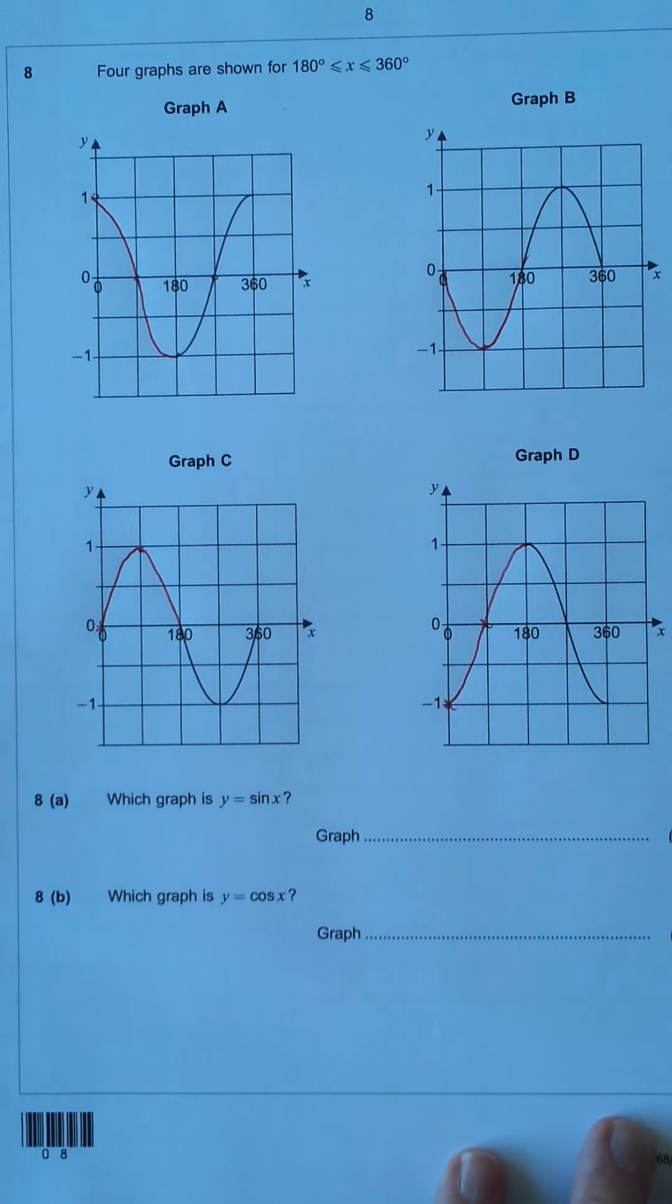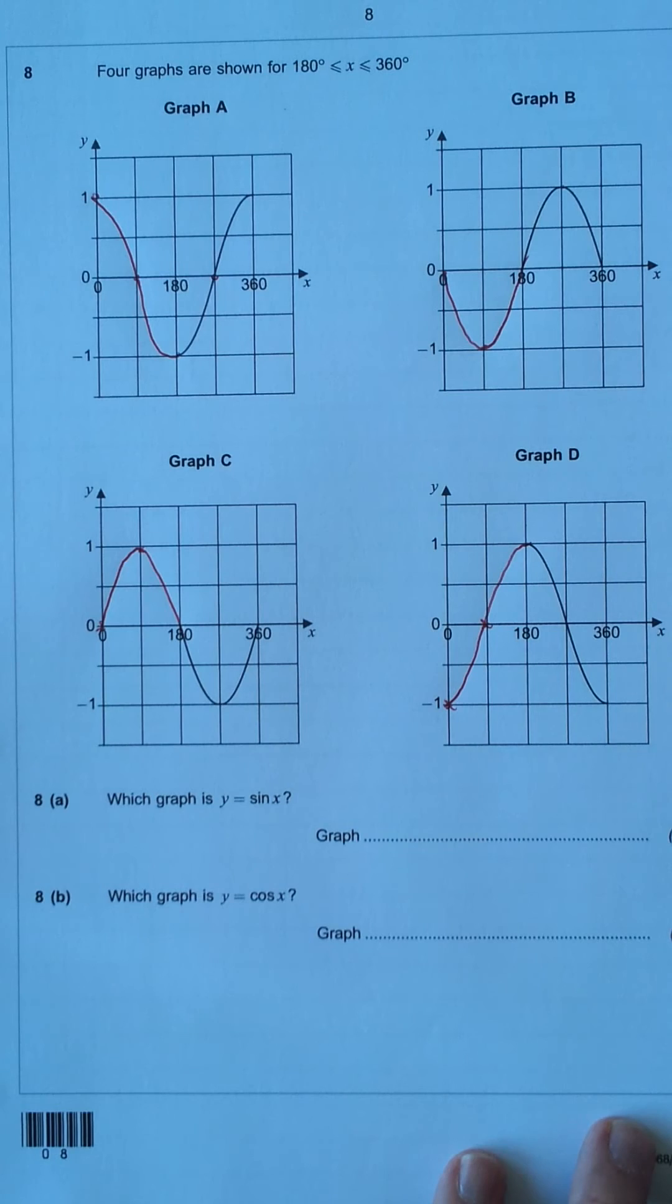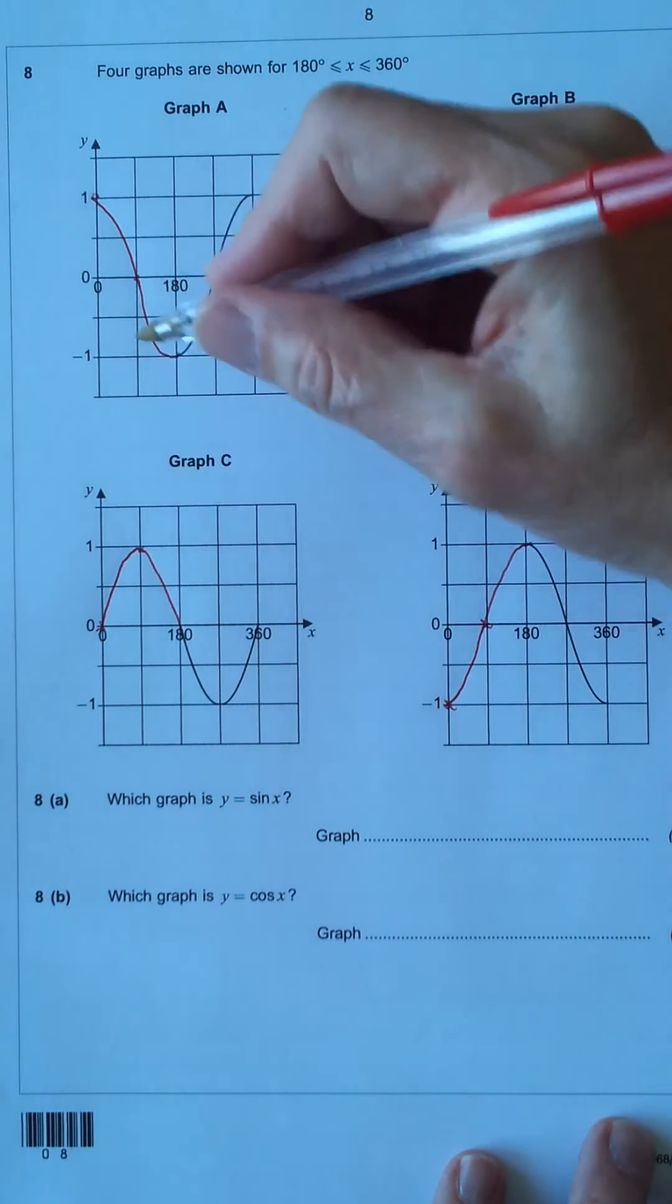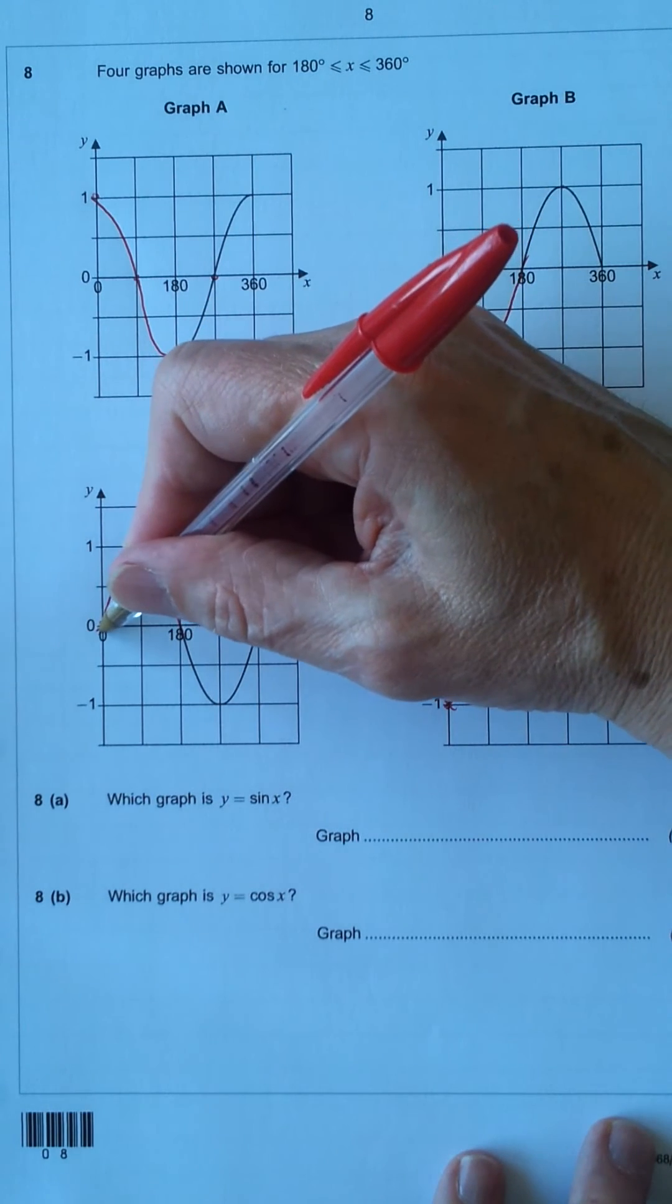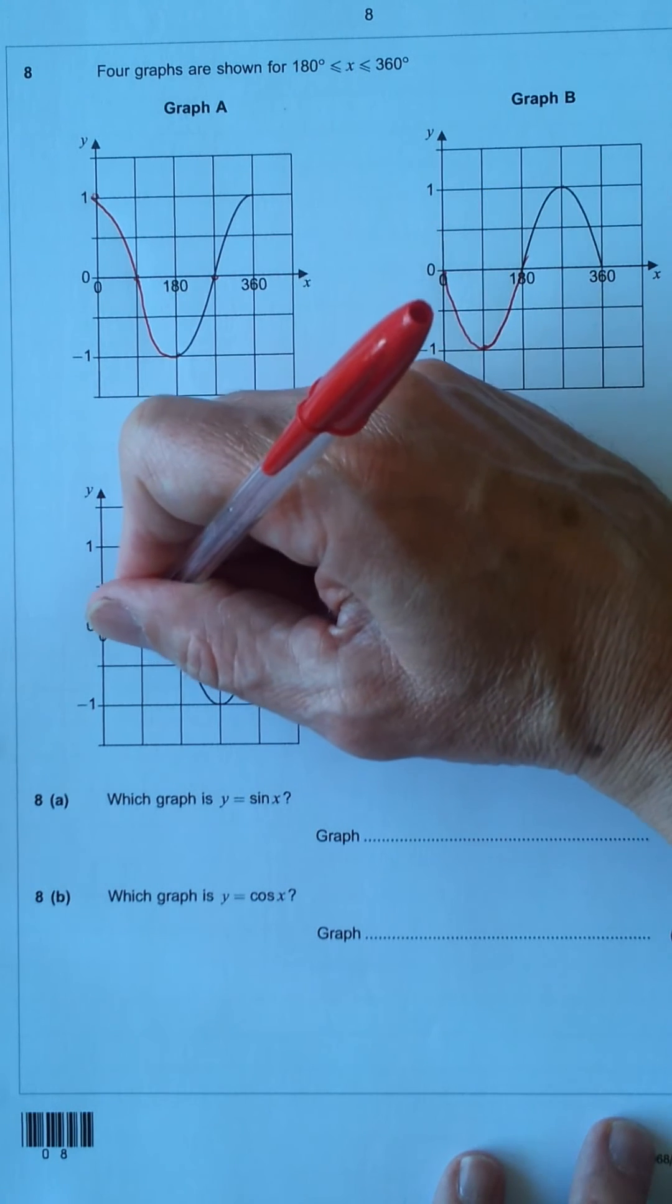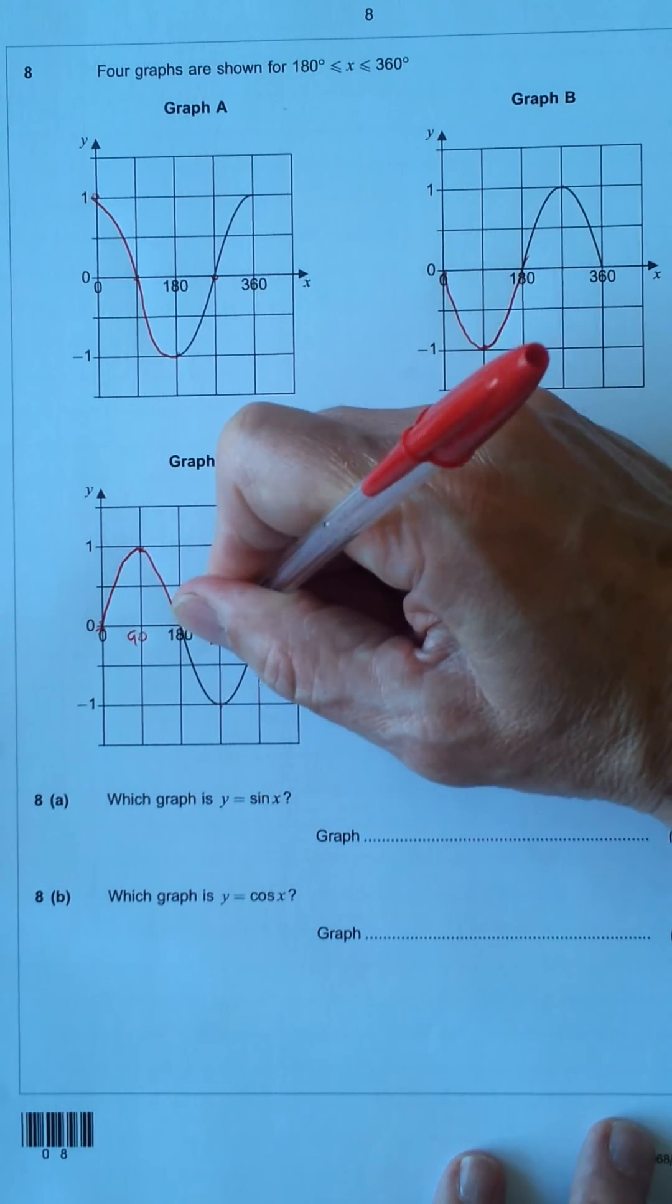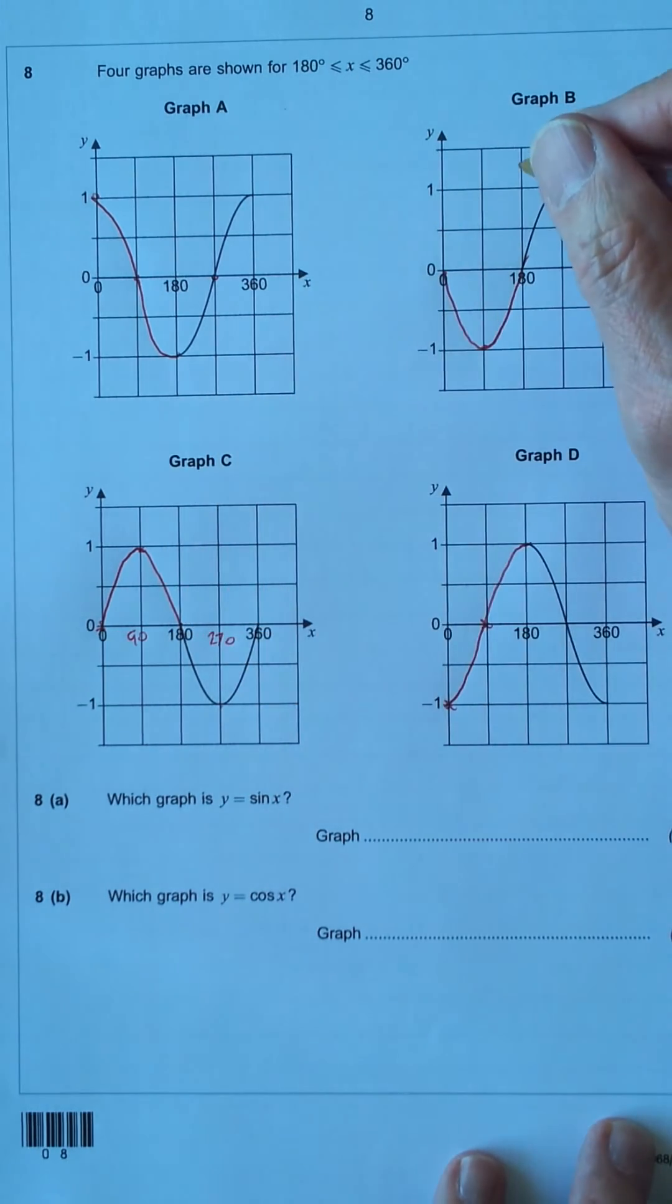You can check some of the values on the calculator if you like. But you should recognise the sine and cosine curves. Y equals sine x starts at 0, goes up to 1 at 90 degrees, and down back to 0 at 180, negative 1 at 270, and back to 0 at 360.